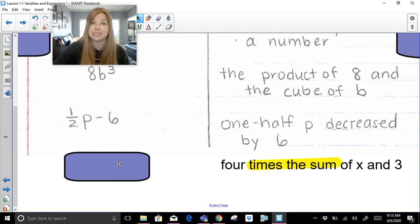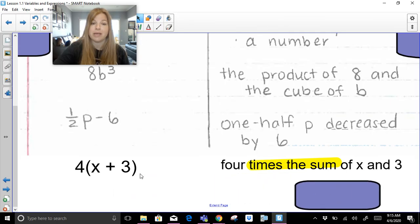If you said parentheses, you're correct. This would be 4 times, open parentheses, x plus 3. This is 4 times this sum. If it just said the sum of x and 3, it would be x plus 3. But now I'm doing 4 times that entire amount, and this is exactly what it would look like.